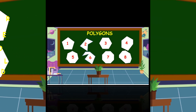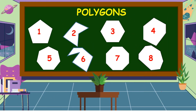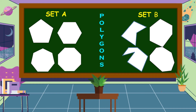Look and observe the polygons. We're going to group them into set A and set B. For set A, we have polygons 1, 3, 5, and 7. For set B, we have polygons 2, 4, 6, and 8.